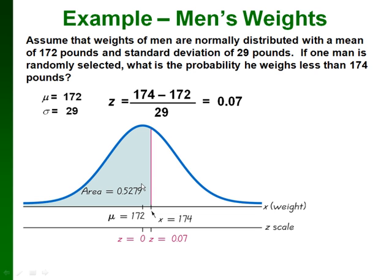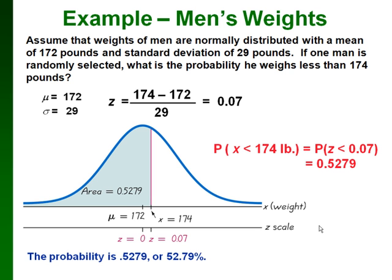So that means that the probability that the man weighs less than 174 pounds is 0.5279, or if we want to put it as a percentage, it would be 52.79%.